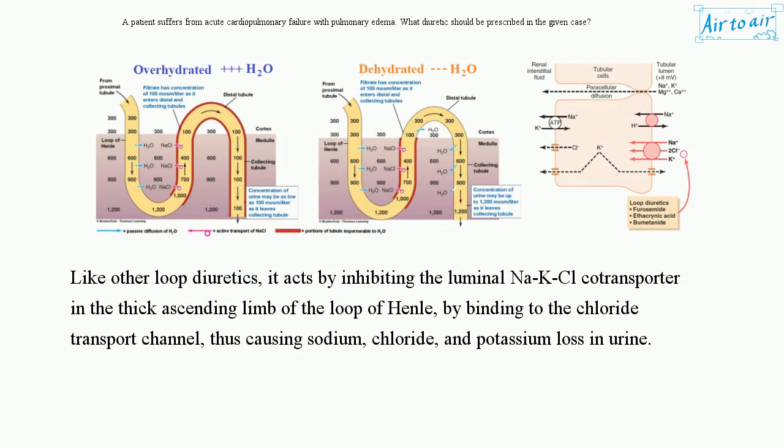Like other loop diuretics, it acts by inhibiting the luminal Na-K-Cl co-transporter in the thick ascending limb of the loop of Henle, by binding to the chloride transport channel, thus causing sodium, chloride, and potassium loss in urine.